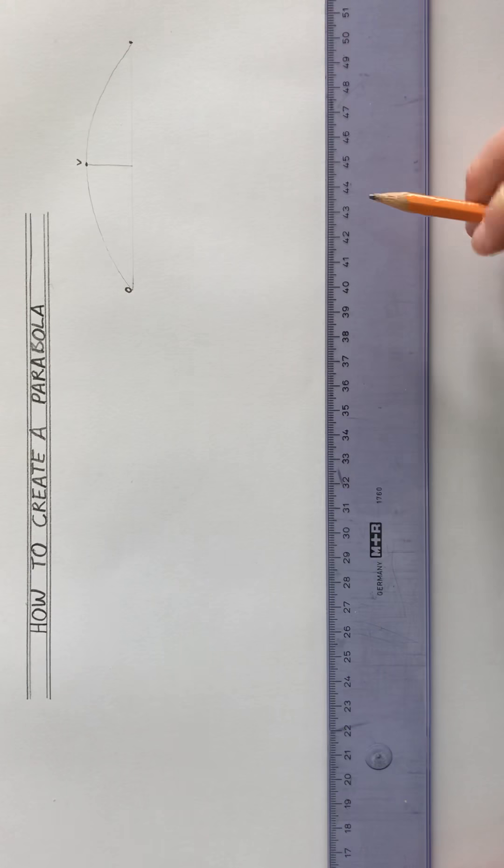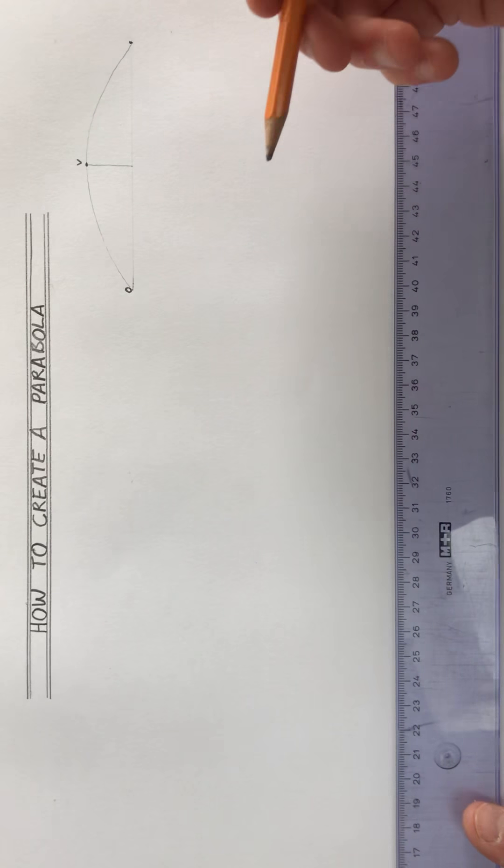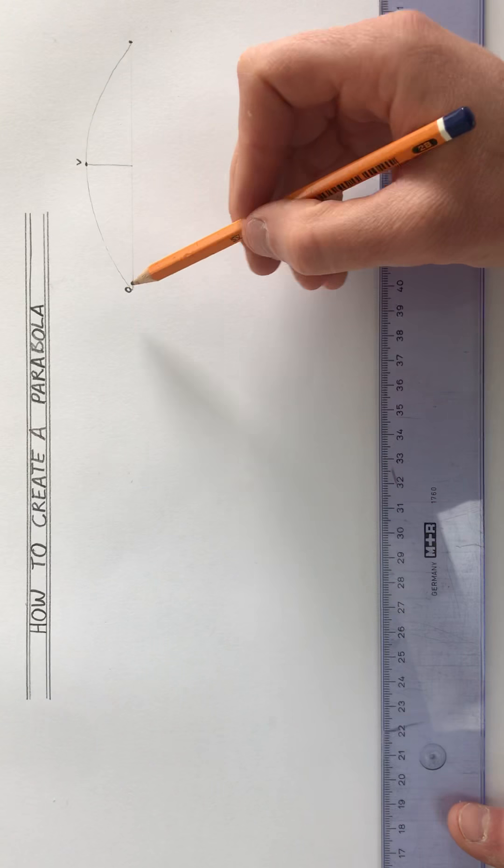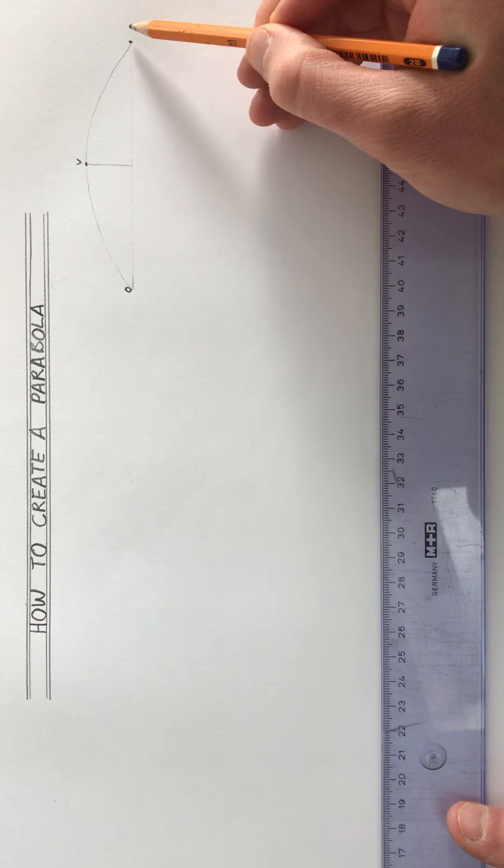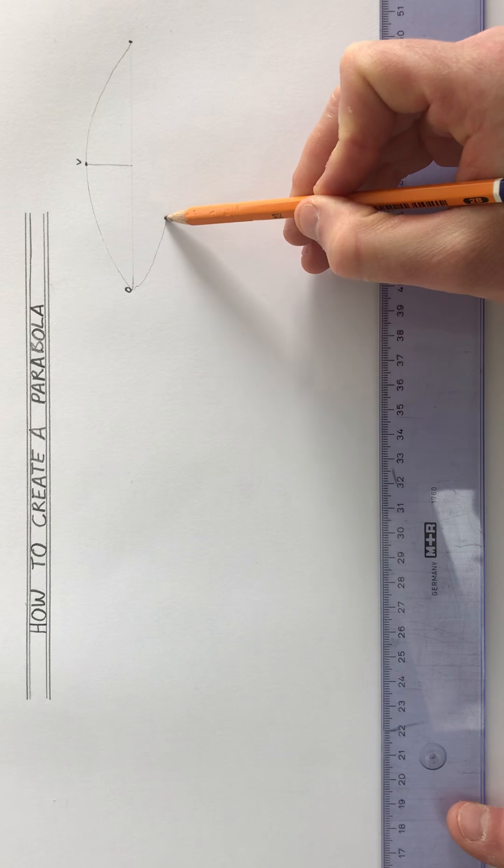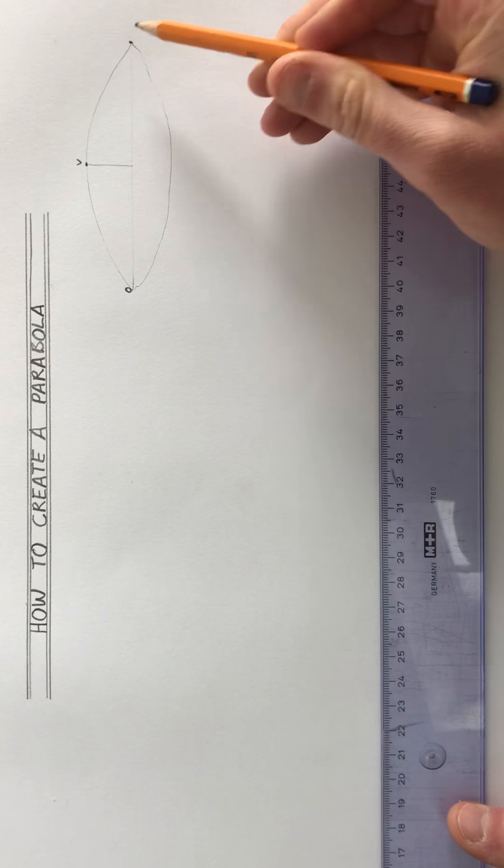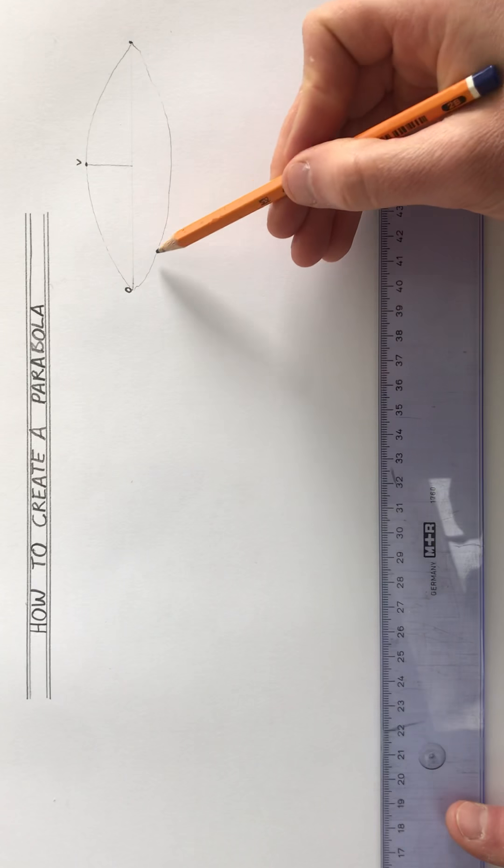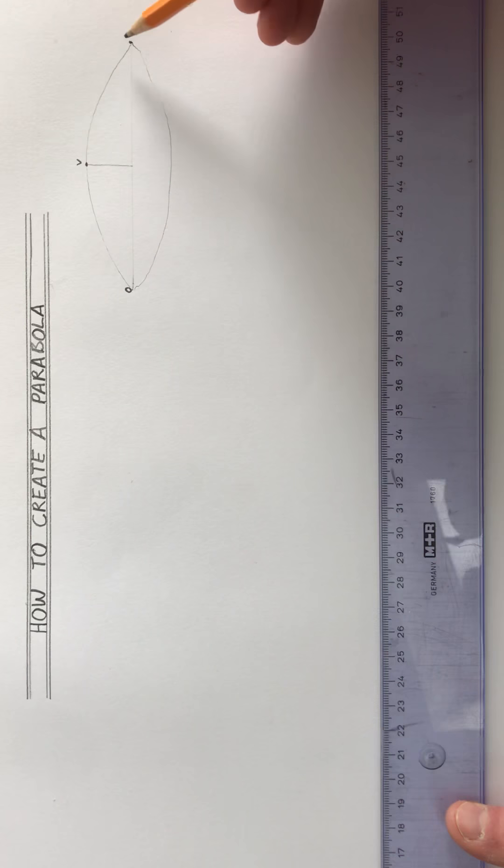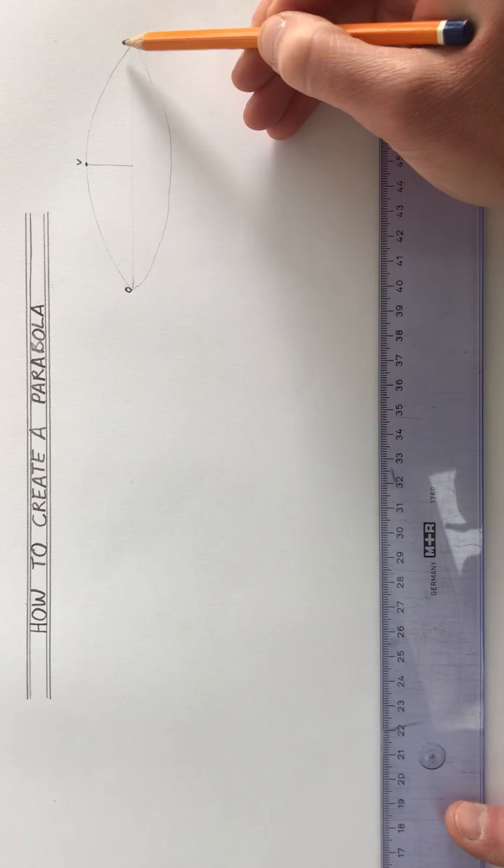And we call that the vertex, and so that's the very basics of it. In a parabola, you could have one going upwards or you could also have one that comes downwards like that. That might be a skipping rope between two people or a washing line.